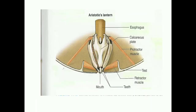There are five pyramids, which are triangular calcareous plates that make up its body. These five triangular calcareous plates surround the esophagus at their base and are called pyramids. Pyramids are connected to teeth towards the mouth. Five plates made up of calcium and triangular in shape are called pyramids, and teeth are also five in number.